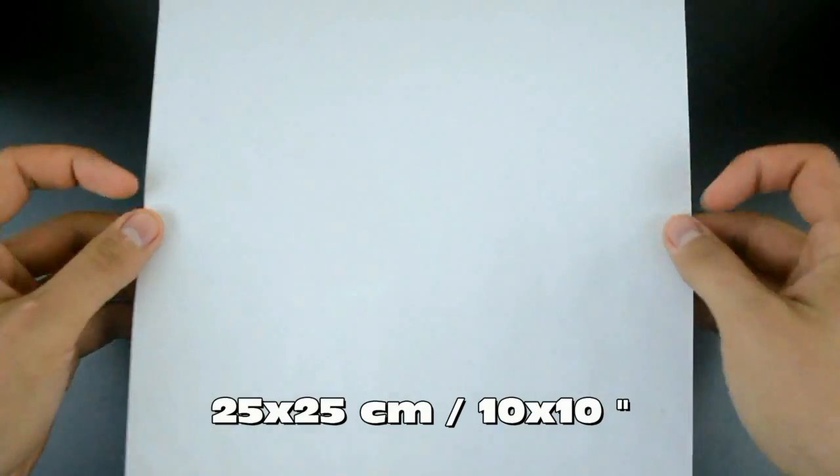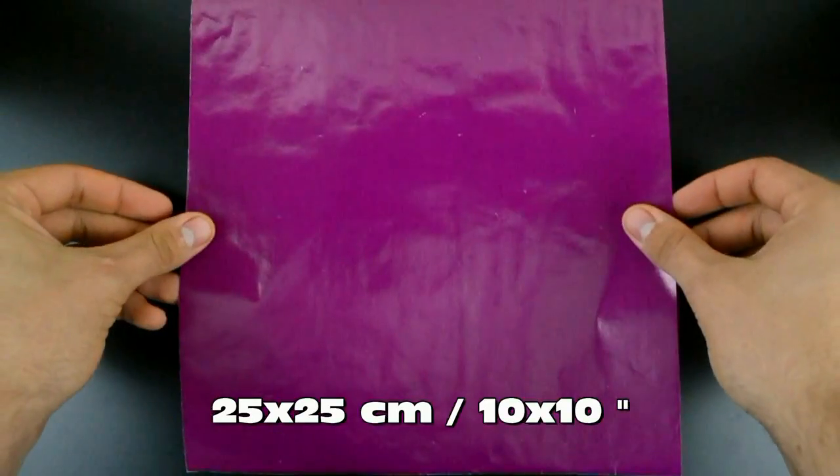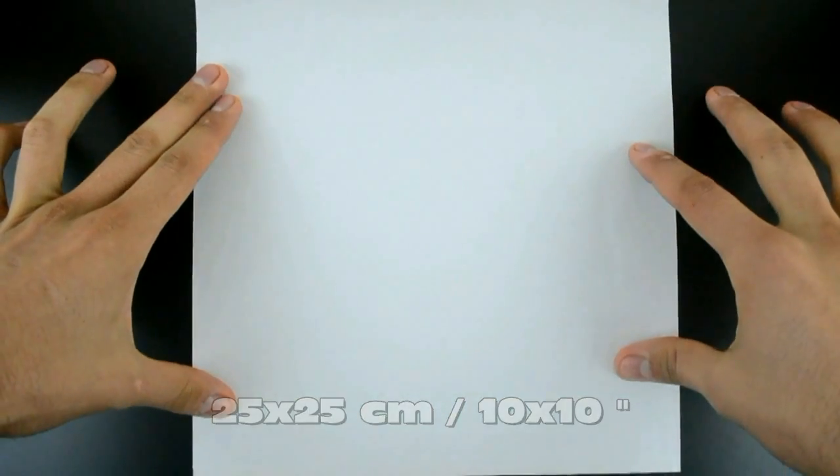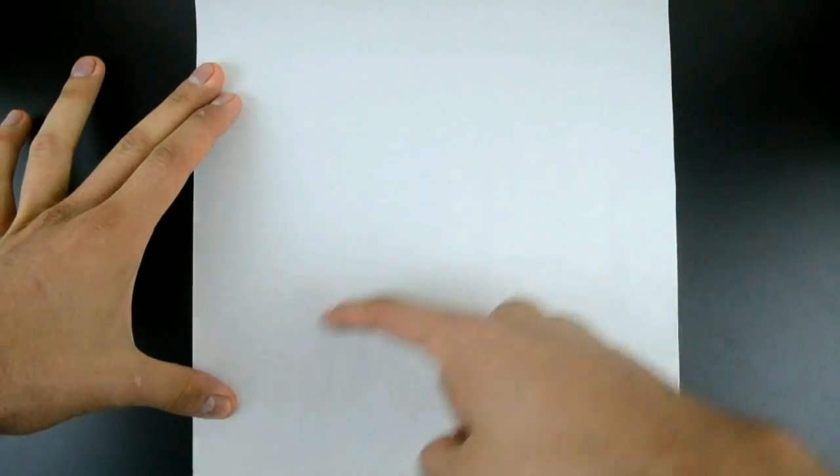I recommend 25 by 25 centimeters, 10 by 10 inches. And with the colored side facing down, the first step is to fold in half along both diagonals, like a letter X.